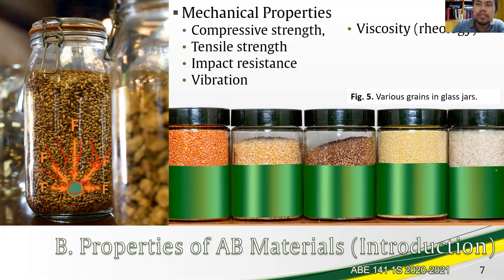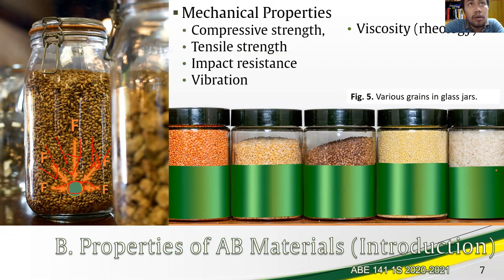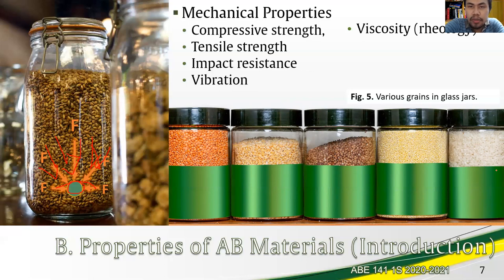Compressive strength is the capacity of the material to withstand loads tending to reduce material size. Tensile strength, as opposed to compressive strength, is the capacity to withstand loads tending to elongate the material. Impact resistance is important in contact mechanics — imagine grains loaded onto a conveyor belt or bucket elevator entering the silo and hitting each other. We will settle with just impact resistance for now, as contact mechanics is confined to advanced courses. Impact resistance is closely related to texture, hardness, and friction properties.